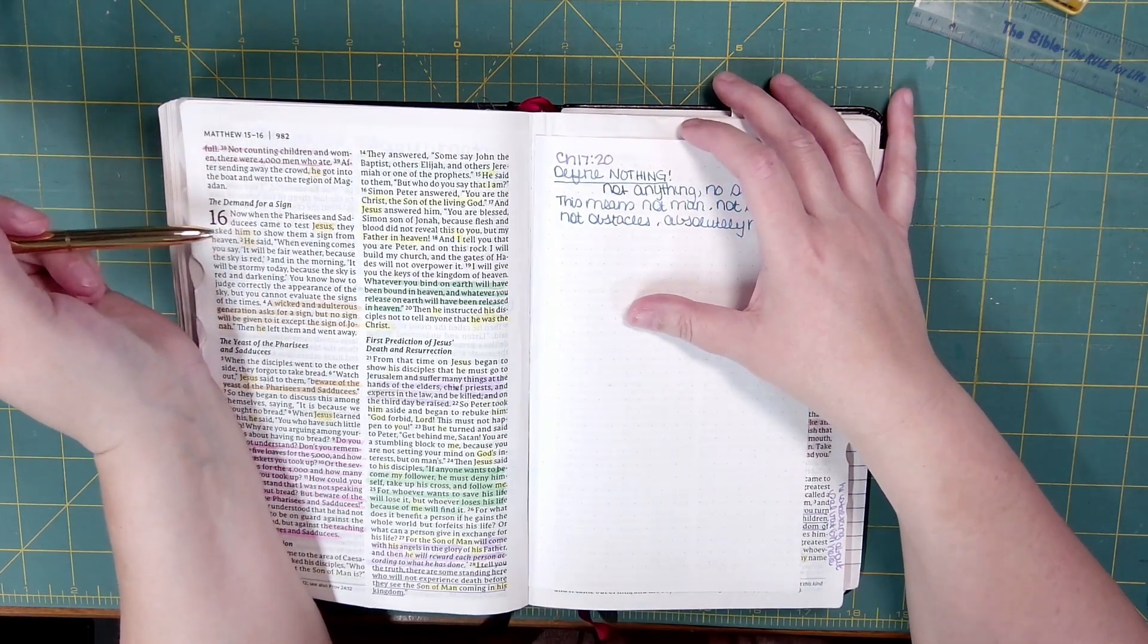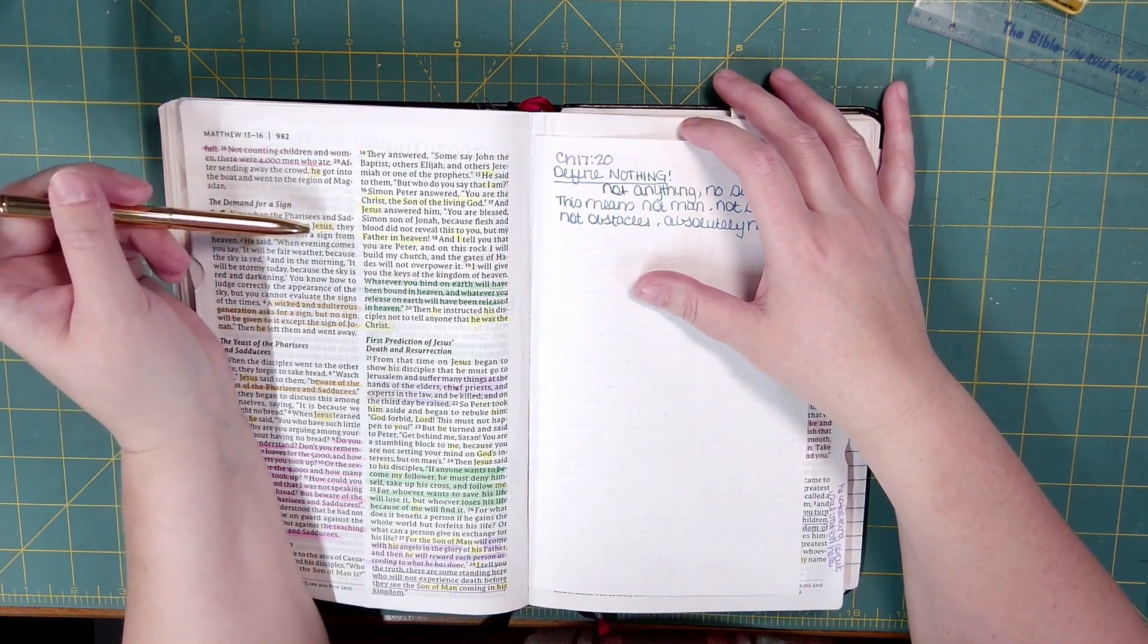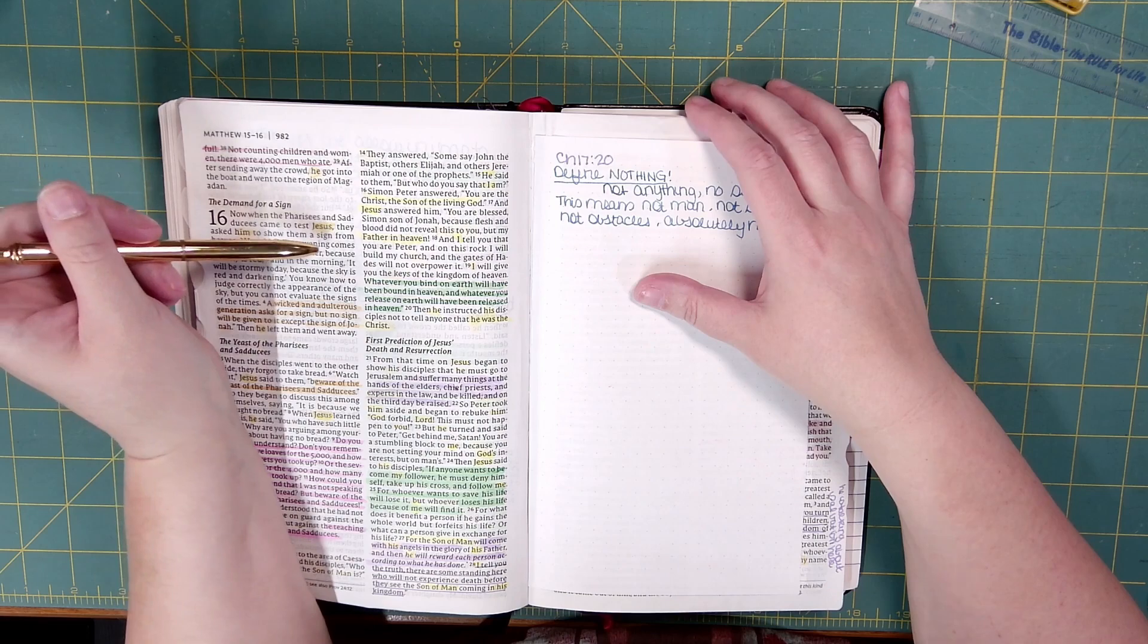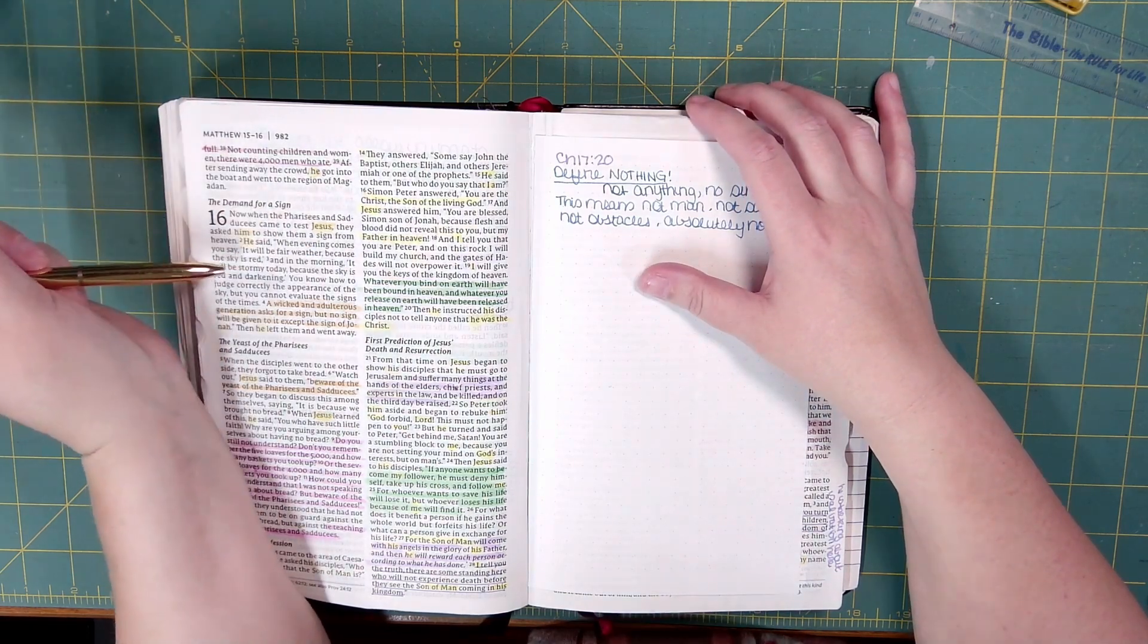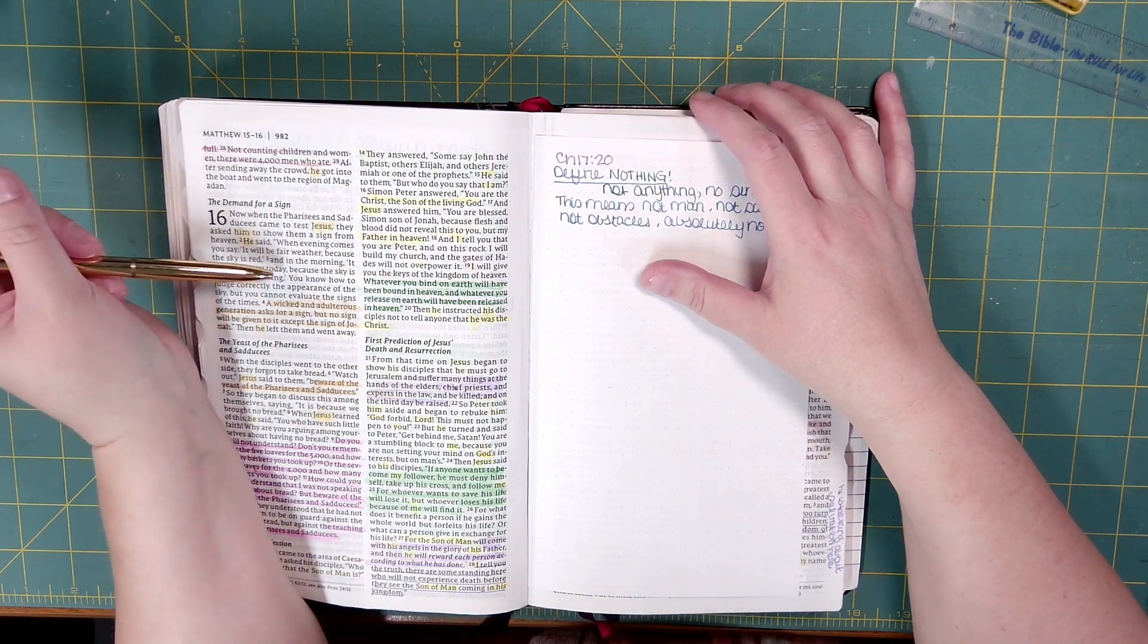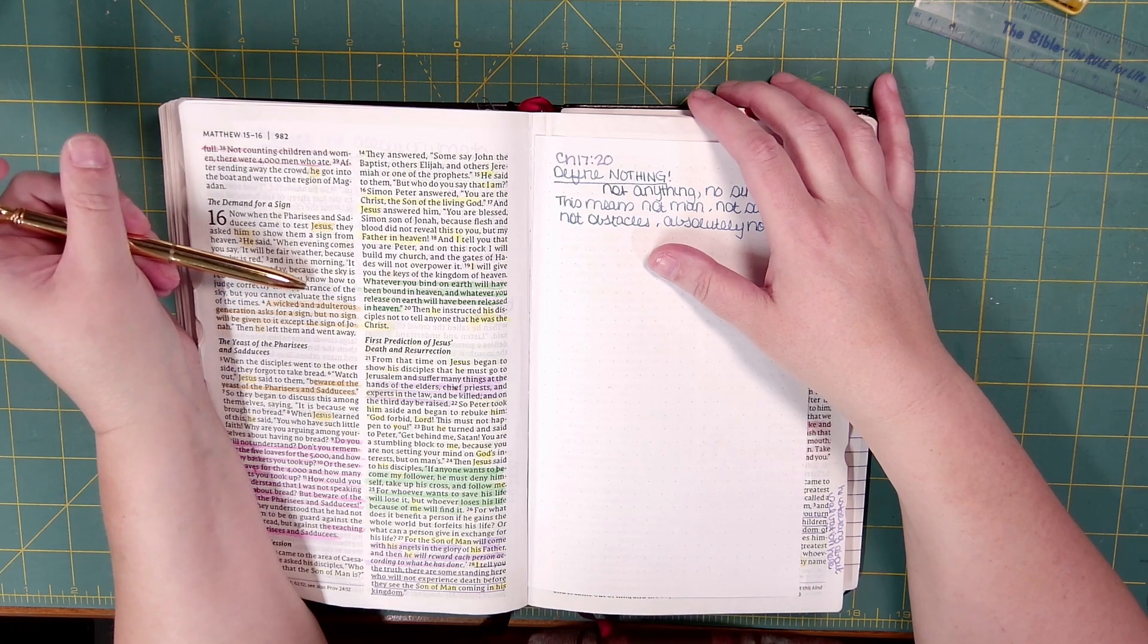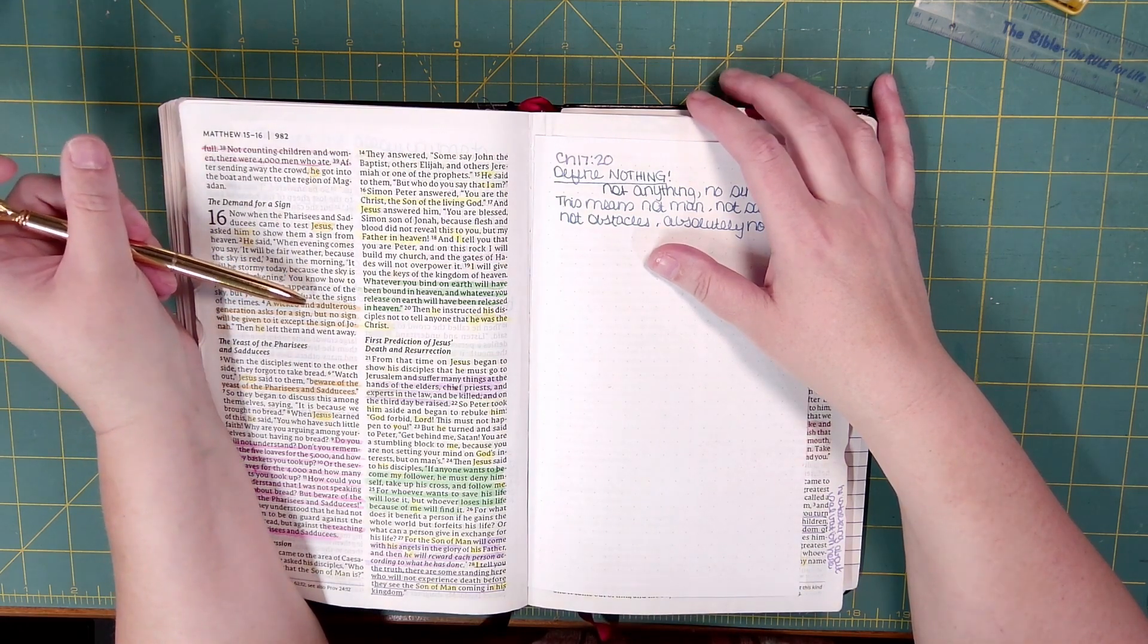Chapter 16. Now when the Pharisees and Sadducees came to test Jesus, they asked him to show them a sign from heaven. He said, When evening comes, you say, It will be fair weather, because the sky is red, and in the morning it will be stormy today, because the sky is red and darkening. You know how to judge correctly the appearance of the sky, but you cannot evaluate the signs of the times.